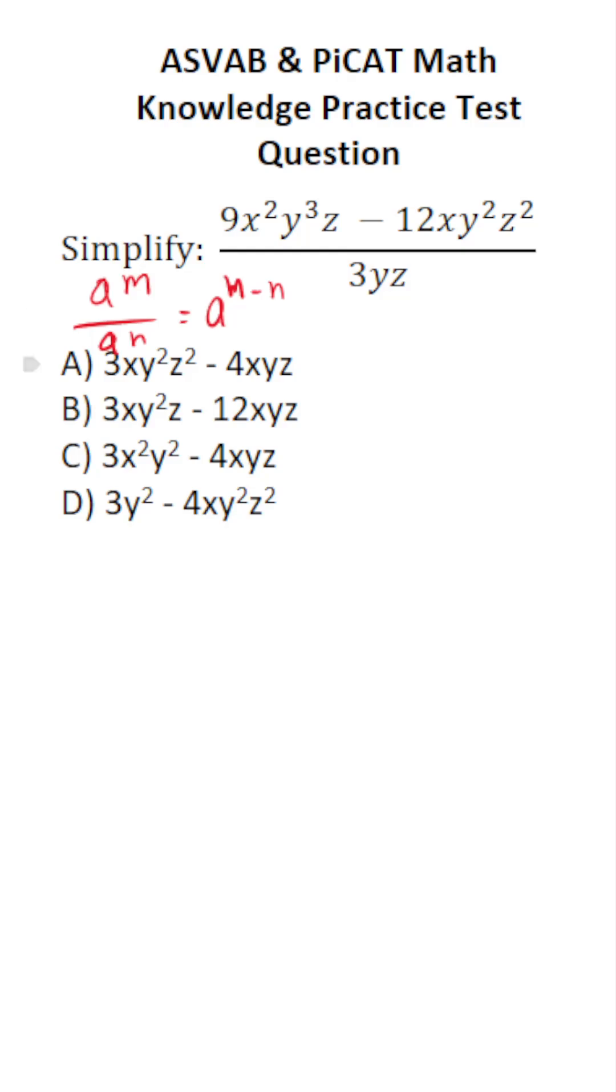That is to say you subtract our exponents. If the result's positive, it goes in the numerator. If the result's negative, it goes in the denominator. So I'm going to start simplifying this by breaking this expression apart into two parts, like so. This becomes 9x squared y to the third z over 3yz minus 12xy squared z squared all over 3yz. So the first thing I did is broke this into two separate expressions.